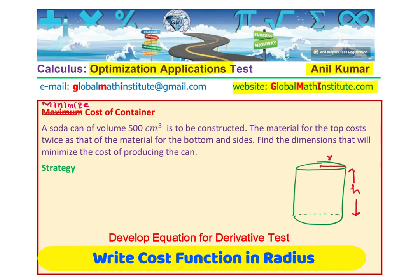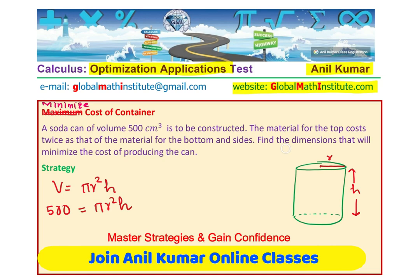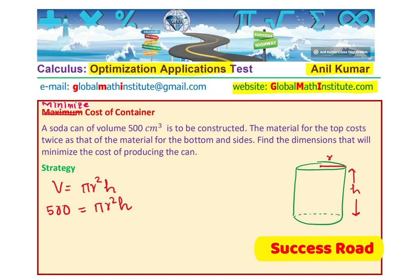So what is the volume? Area of the base times height. So the volume is pi r squared times height. We are given this volume as 500 centimeter cube, so 500 equals pi r squared times h. We need to find the dimensions that will minimize the cost, which relates to surface area. From here, we can relate radius with height. Writing height in terms of radius, we get h equals 500 over pi r squared. So the given volume helps us to relate one variable to the other.